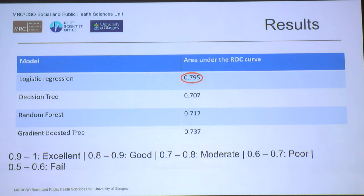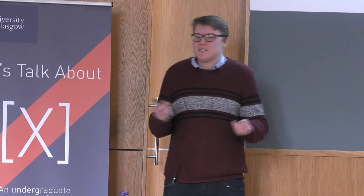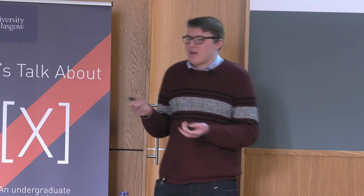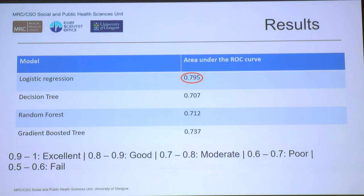The first thing we wanted to do was identify which model performs best. The highest number is best, so in this case logistic regression performed best with an AUC of 0.795 — a moderate to good model. Even the worst performing model, the decision tree, was moderate to poor, so there's not a large range, but we've identified the best performing model.